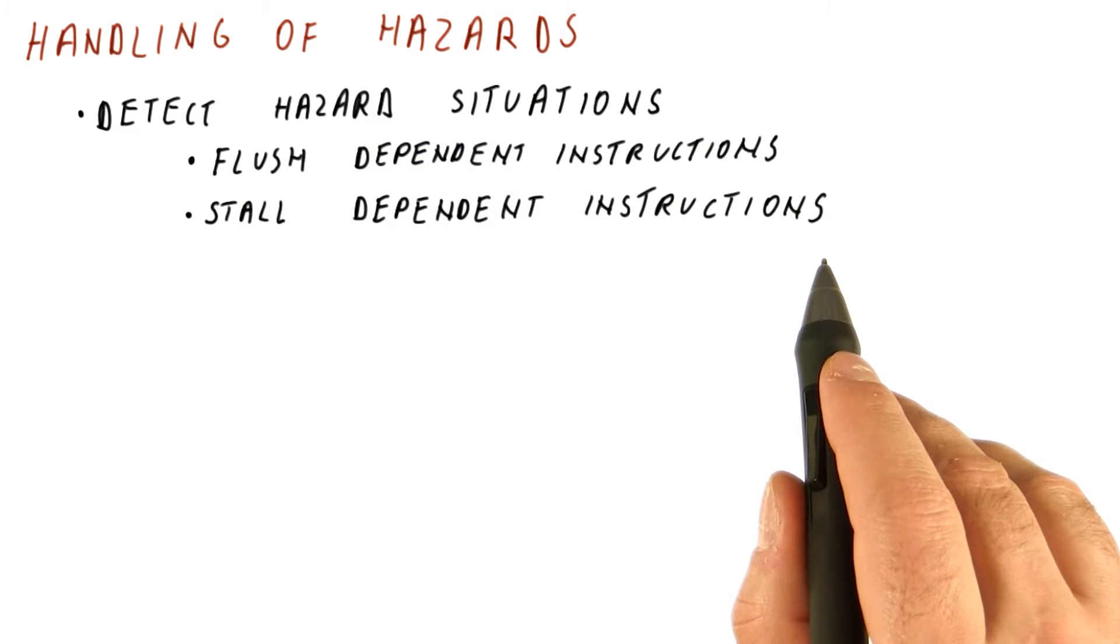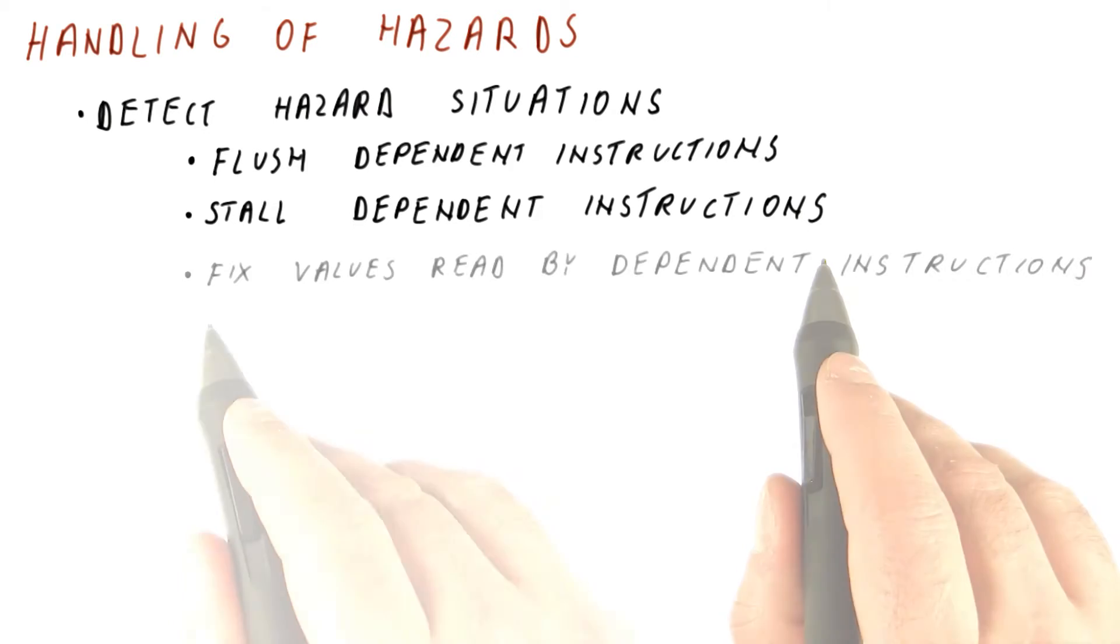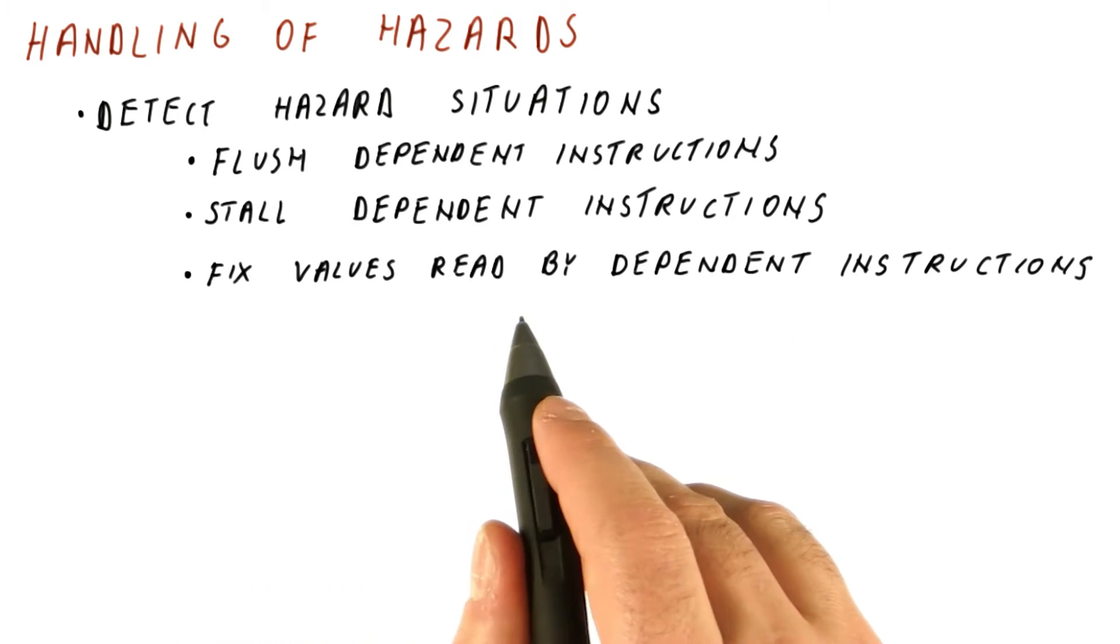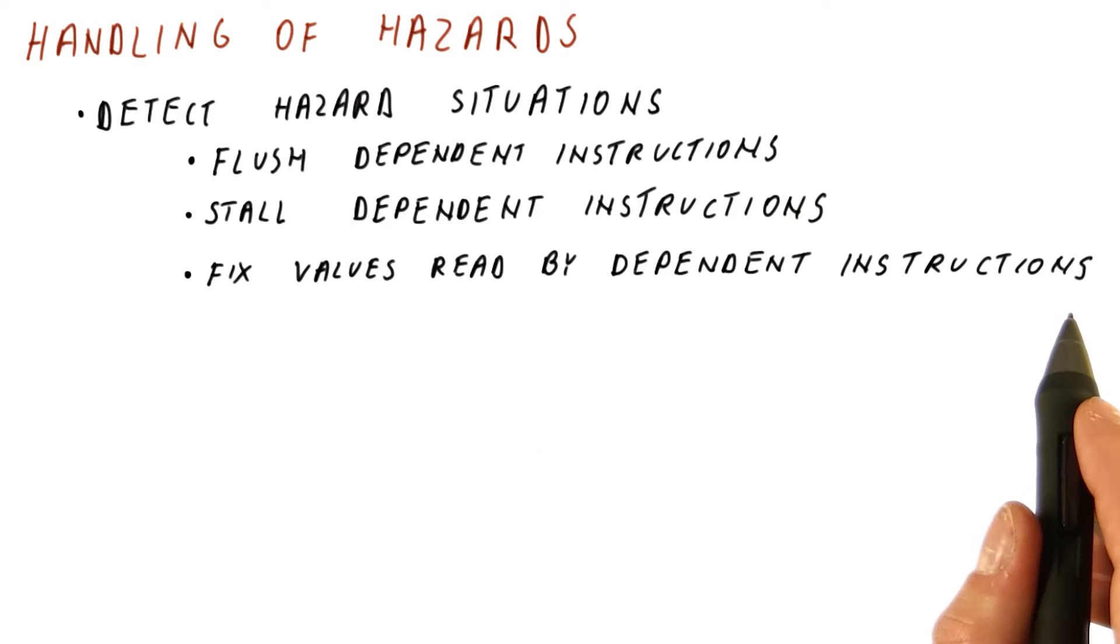stall dependent instructions in the pipeline so that the read is delayed and they get the correct value, or even fix values that were read already by the dependent instructions so that we feed them the right value and they proceed unharmed through the pipeline.